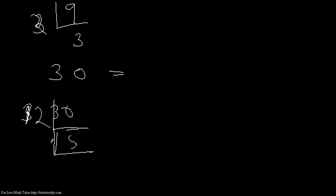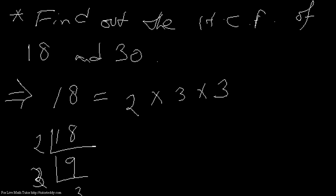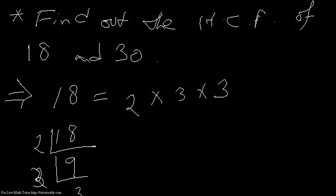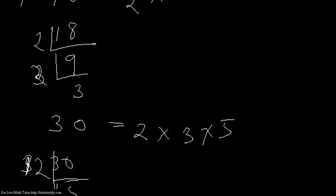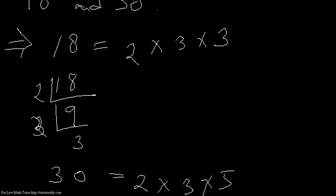So 30 = 2 × 3 × 5. Now see, the factors we have in 18 are 2 × 3 × 3, whereas in 30 I have 2 × 3.